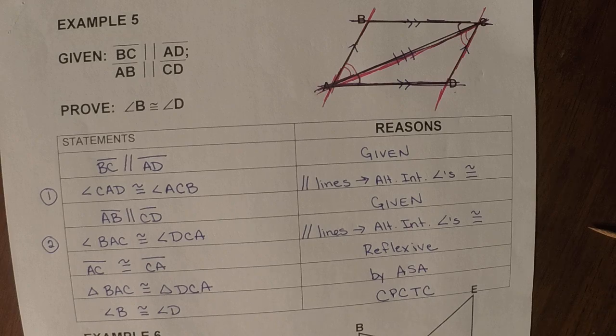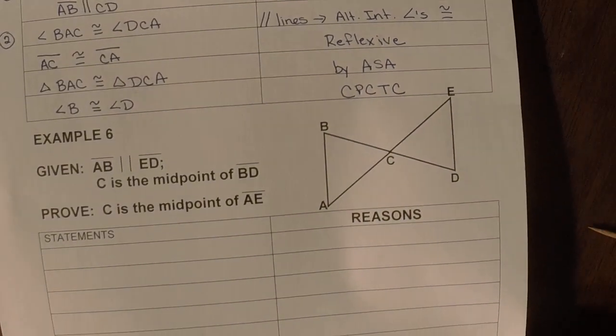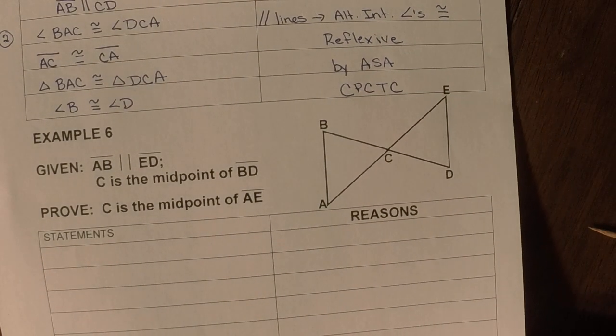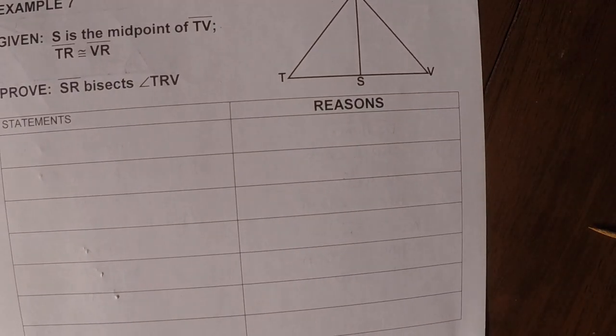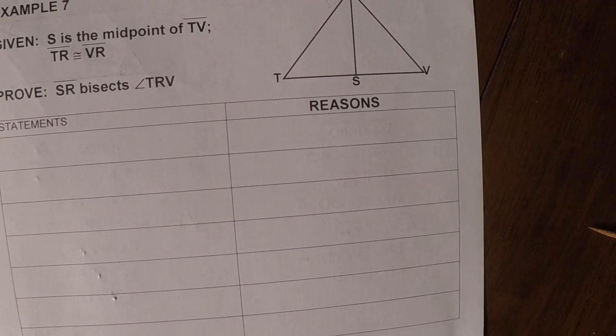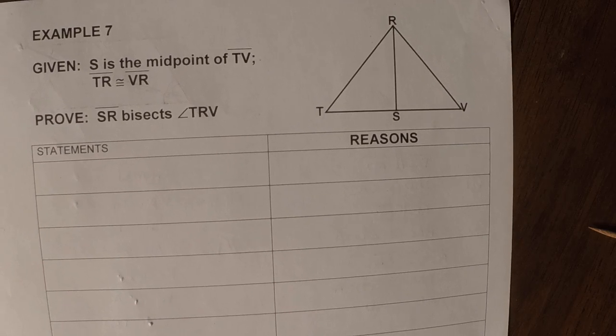So see if you guys can complete the rest of the examples on your own. Six does have parallel lines, so remember, you're going to be trying to find those alternate interiors. And then example seven on the back goes back to a midpoint, and then you are going to have to use a shared side. So if you have any questions or need any help, just let me know. And Carson says goodnight.